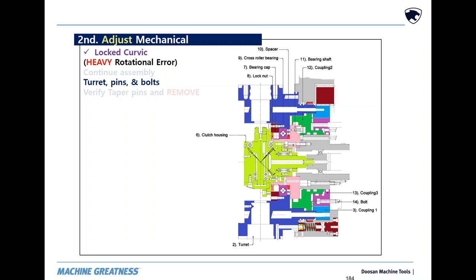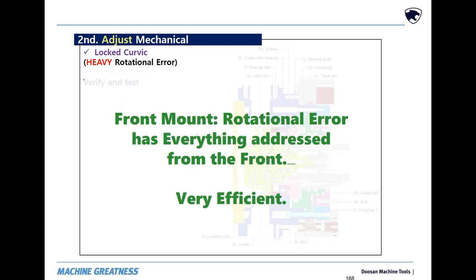Continue to assemble to the point of adding the turret. Add turret pins and turret bolts. Verify the position and remove the pins. Finish the remaining assembly. Re-verify the appropriate accuracies. The turret with a front mount live tool is very efficient and there's no need to remove anything from the back.